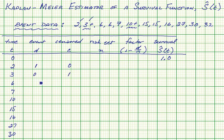At time six, two events, none censored. At seven, one event, none censored. At ten, no events, but one censored.